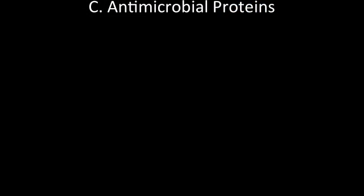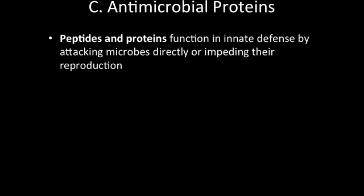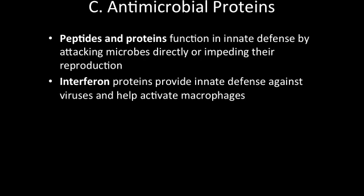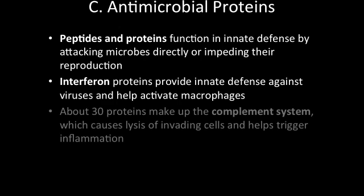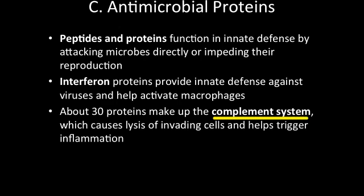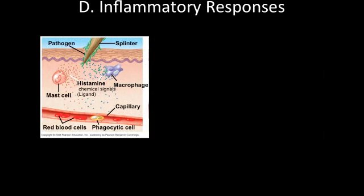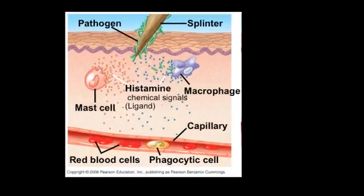Cells of mammals that are under attack can also secrete antimicrobial proteins that inhibit the production of the pathogen. This class of proteins are called antimicrobial peptides or proteins. Interferons are proteins that provide innate defense by interfering with viral infections. Virus-infected body cells secrete interferons, which induce nearby uninfected cells to produce substances that inhibit viral infection, as well as signaling macrophages to come to the rescue. Approximately 30 different proteins make up the infection-fighting complement system. These proteins circulate in an inactive state and are activated by substances on the surface of many foreign microbes or pathogens. The complement system also functions in the inflammatory response.